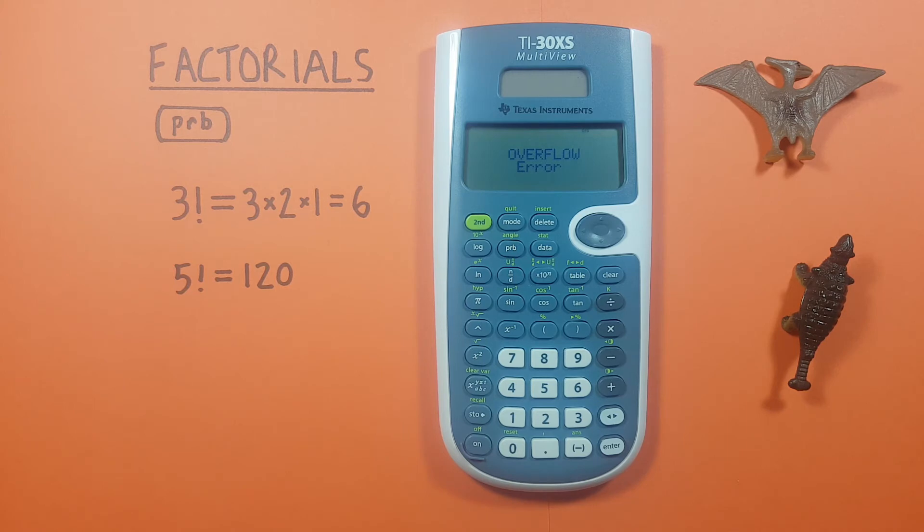So if you're getting that you might be trying to find the factorial of a number that's just too big. The largest number you can find the factorial of is actually 69.